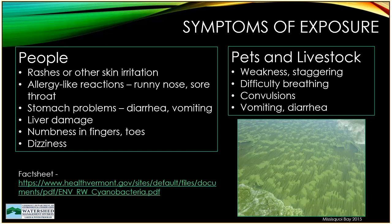Pets and livestock are more likely to be seriously affected. Every year — it's happened already in 2020 — there are reports of dogs that have died as a result of drinking water containing cyanobacteria or eating cyanobacteria material washed up on shore. Symptoms of exposure in animals include weakness and staggering, difficulty breathing, convulsions, vomiting, and diarrhea, and in dogs it can lead to death. The original name for anatoxin was 'very fast death factor' — in cases like this, death can occur in a matter of minutes. It's very important that those of you with pets or livestock are aware of what cyanobacteria look like.